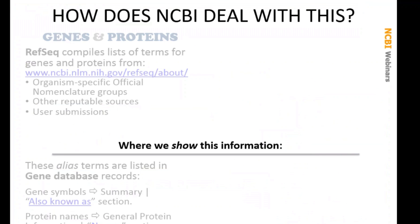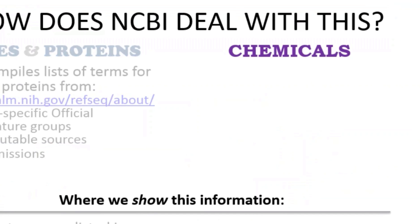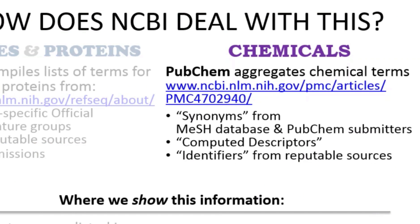While the RefSeq group deals with genes and proteins, we have another group at NCBI that deals with chemicals. The PubChem group has automated processes that aggregate all the terms used for chemical compounds. Aliases or synonyms for chemicals are compiled from MeSH indexing curators at the NLM and from submitters of chemical data to PubChem. In addition, there are several different nomenclatures used for chemicals based on their atomic structure. We have a software program that computes these terms based on the chemical structure — these are called descriptors. These include IUPAC as well as several others such as InChI, InChI Key, SMILES, and SMARTS. Finally, we aggregate identifiers used by various organizations such as the FDA's UNI term, the EU's European Chemical Agency's number, and others. These are placed on the PubChem compound record pages in the names and identifiers section.